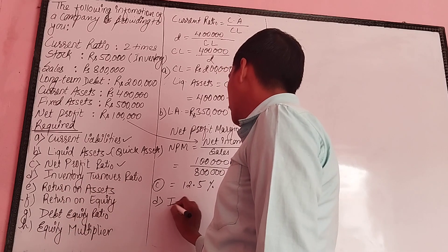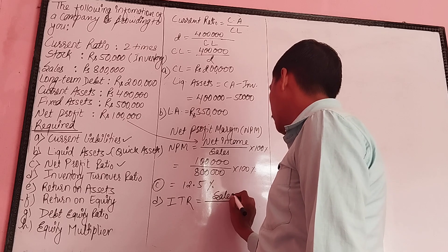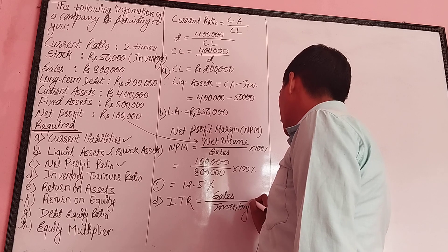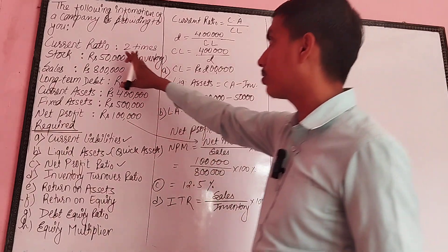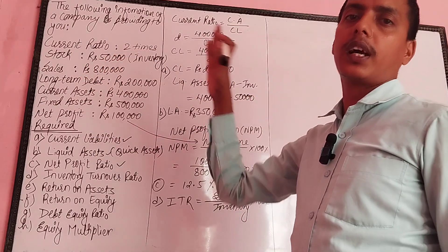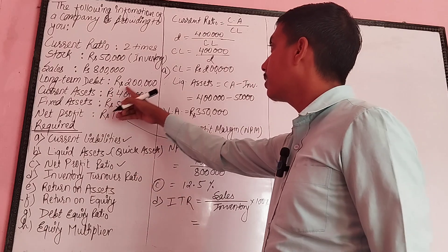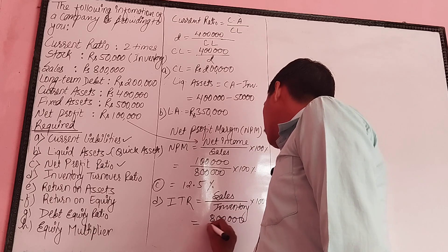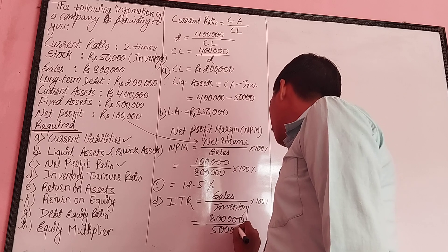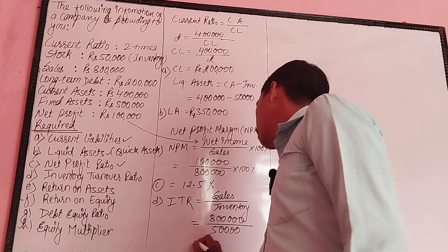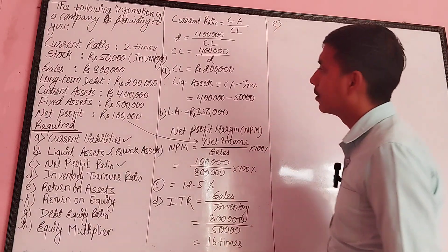Inventory turnover ratio (ITR). Formula: sales divided by inventory, into 100%. Here, cost of goods sold is not separately given — only gross profit is given — so we cannot calculate cost of goods sold. Therefore we use sales divided by inventory (stock). Sales divided by stock gives us 16 times.